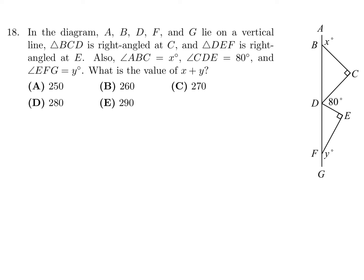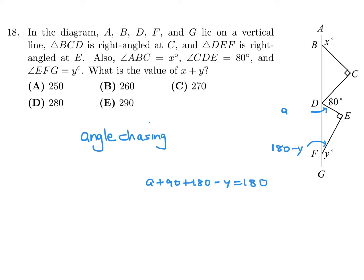In the diagram, A, B, D, F, and G lie on a vertical line. Triangle BCD is right-angled at C; triangle DEF is right-angled at E. Angle ABC is x degrees, angle CDE is 80 degrees, and angle EFG is y degrees. We need x plus y — this is angle chasing. The angle supplementary to y is 180 minus y. Solving the triangle gives angle a equals y minus 90.